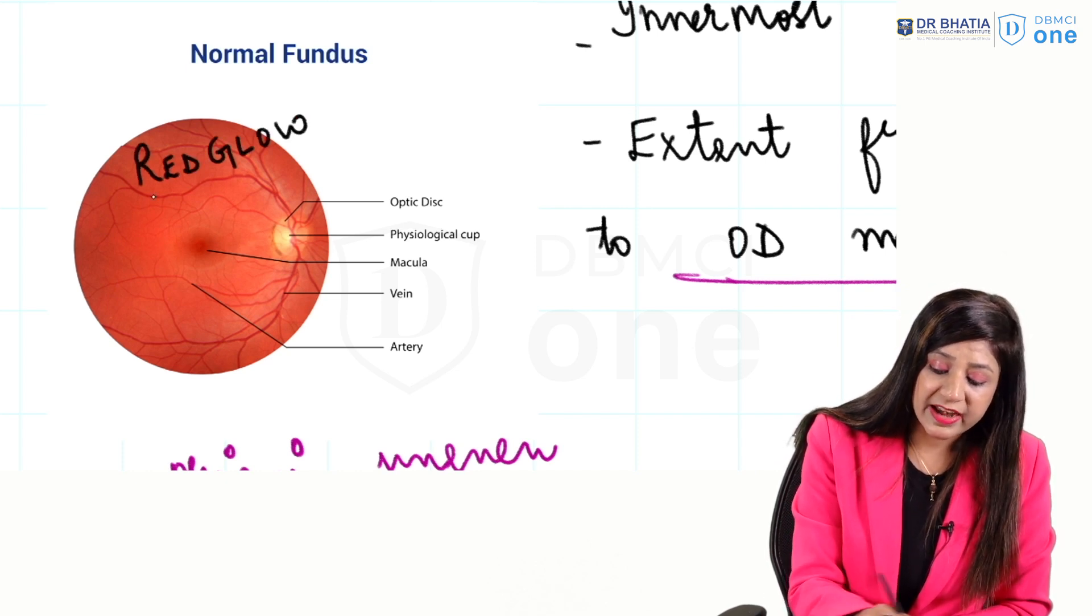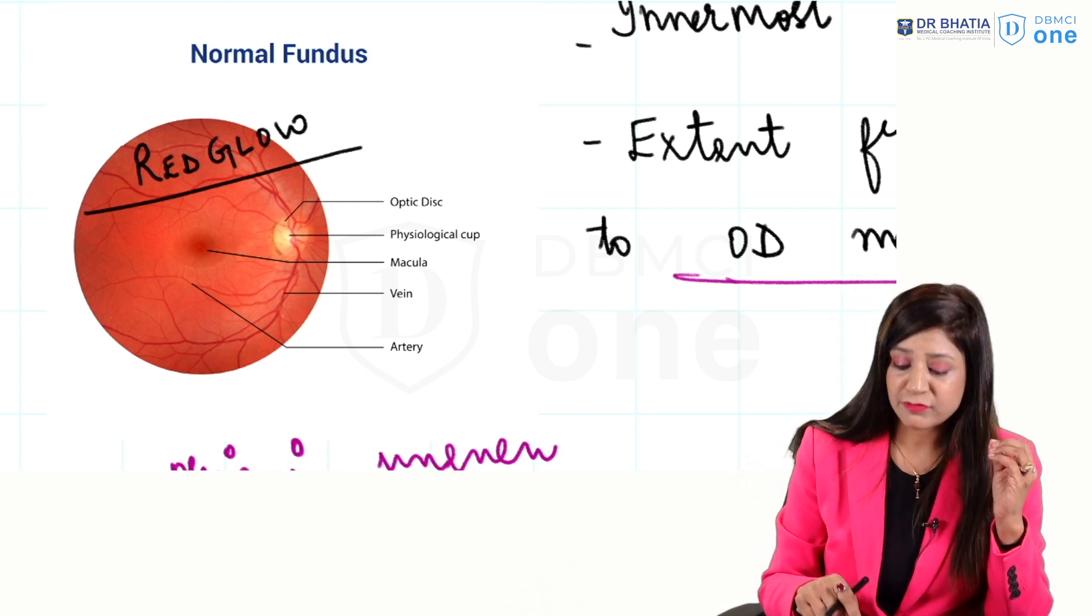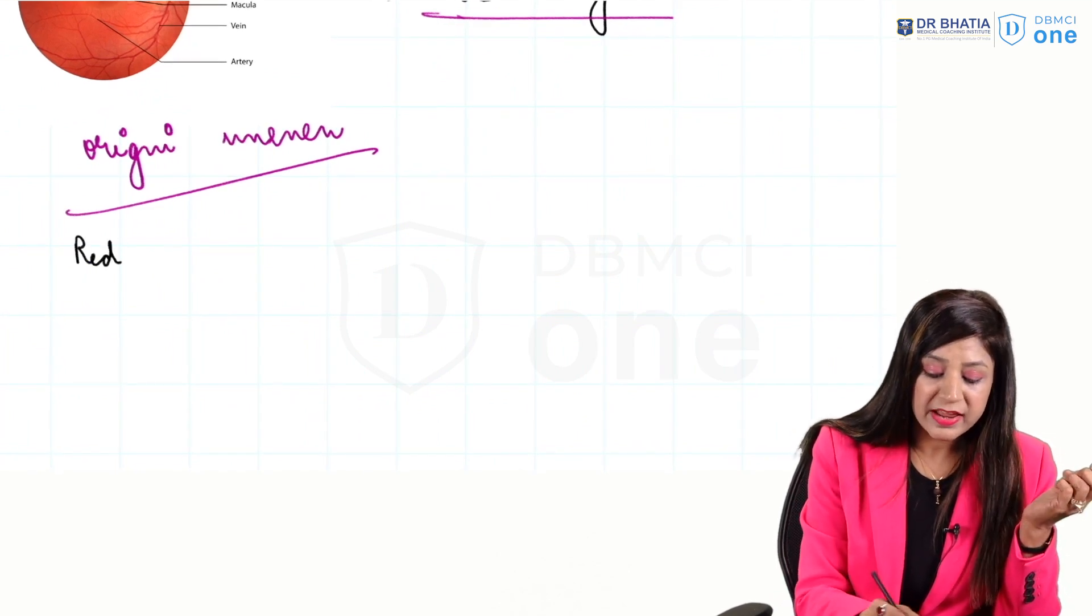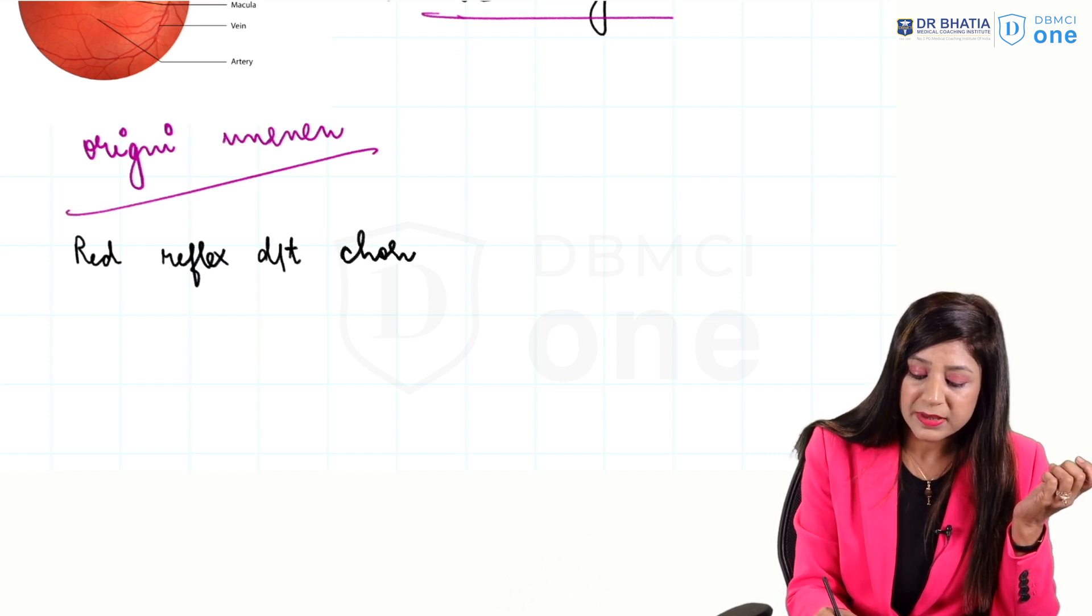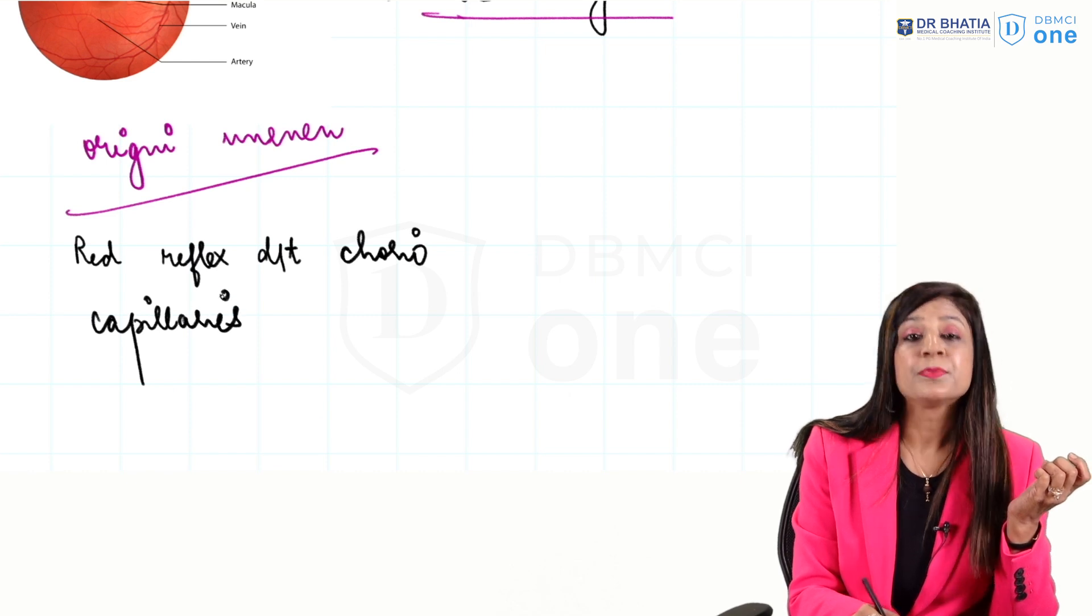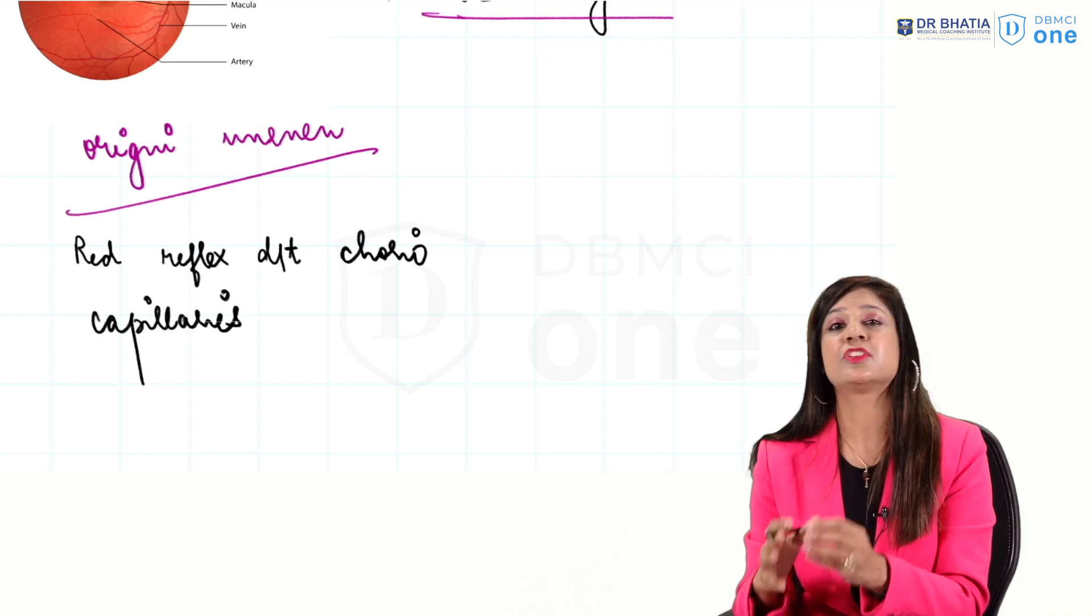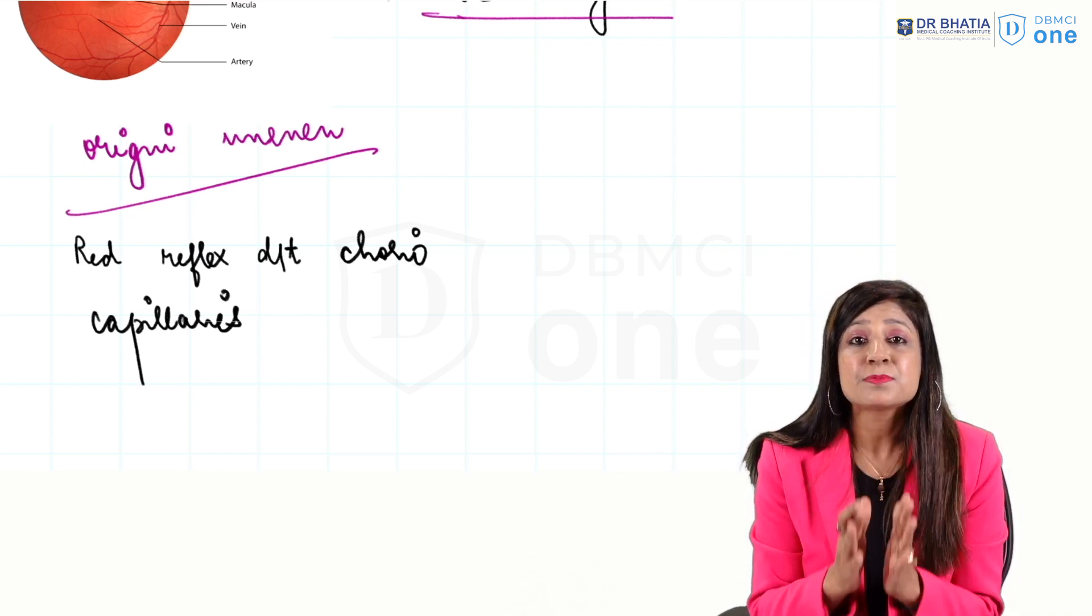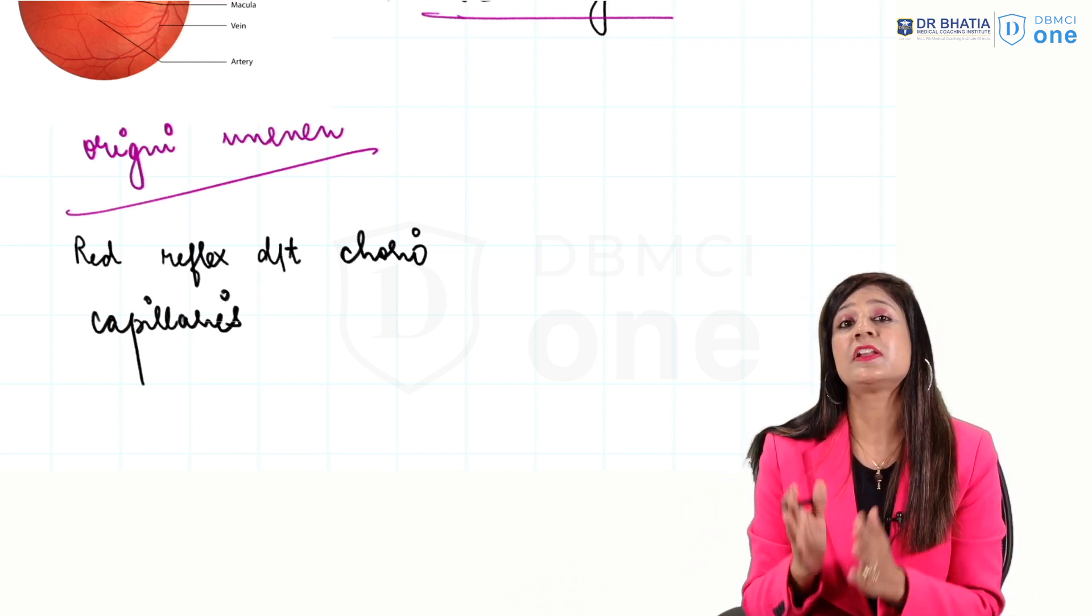You always get a reddish reflex, called a red glow or fundal glow. Why do we get this red reflex? This red glow is due to the choriocapillaries. This is important to understand. If there is something in the vitreous cavity obstructing the view and you are not able to see the choriocapillaries, you will have absence of the fundal glow. This concept we will use when we study vitreous hemorrhage.